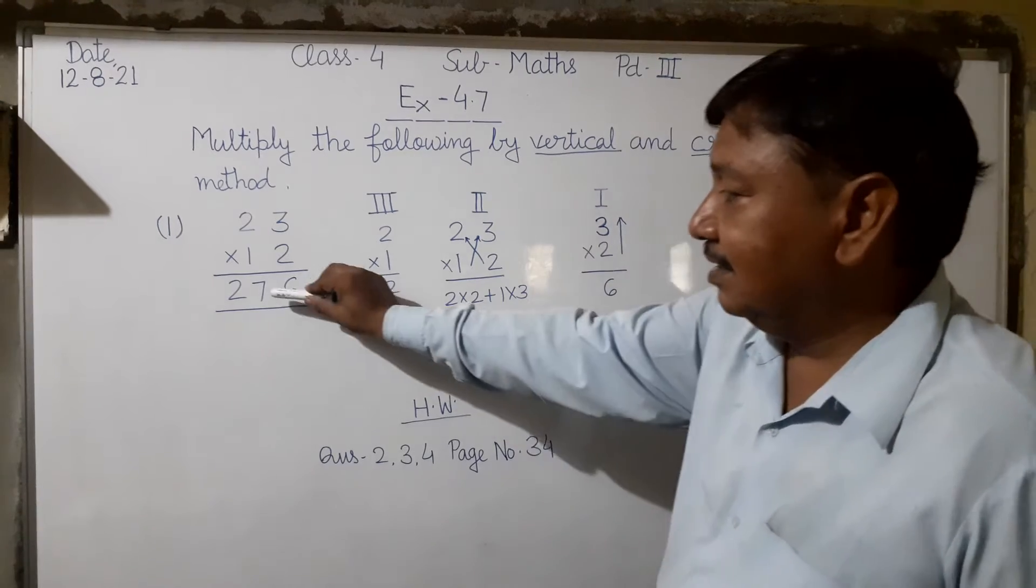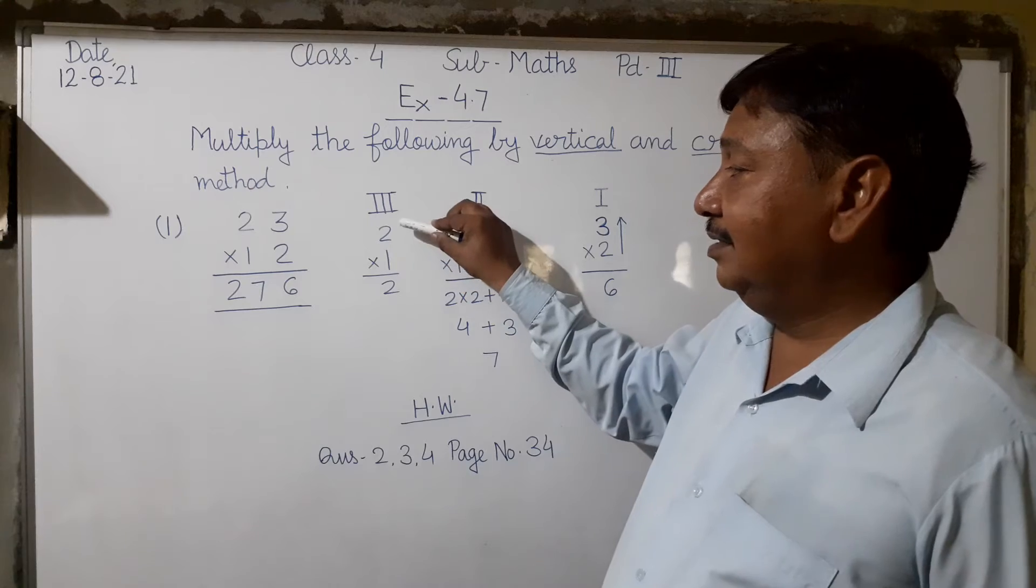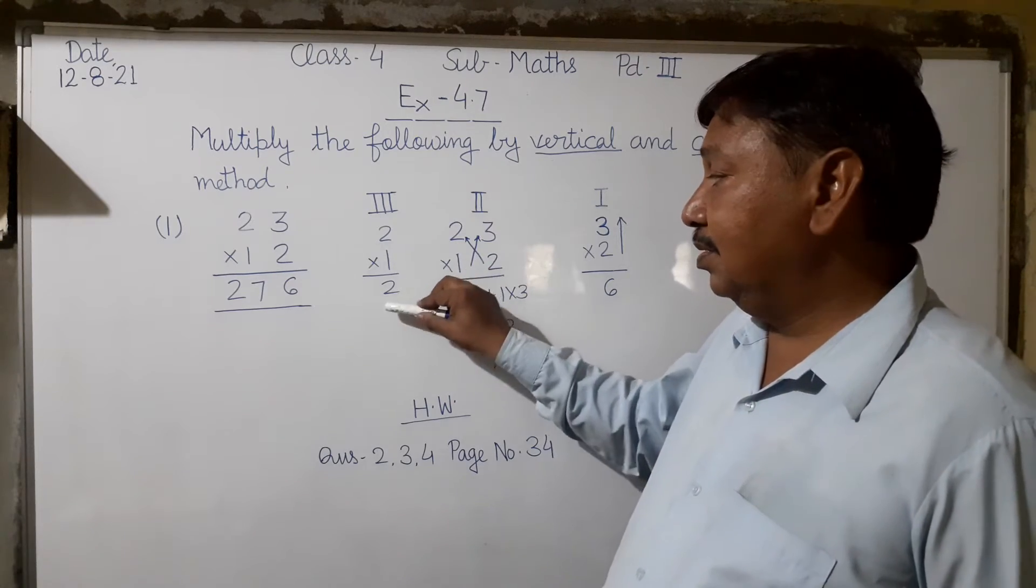Step 3: Multiply 1 and 2, which equals 2. This gives us the final answer 276.